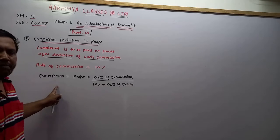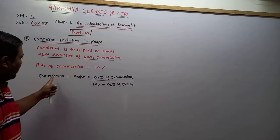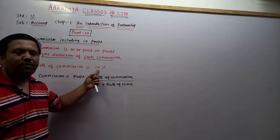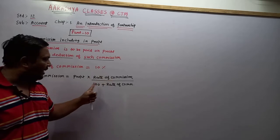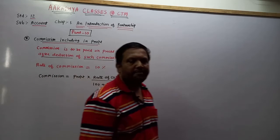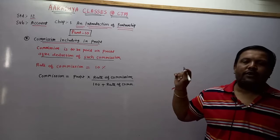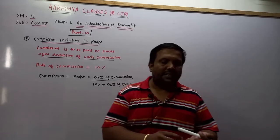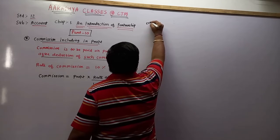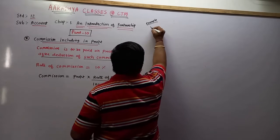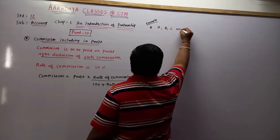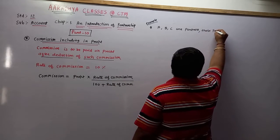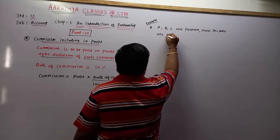यह formula याद रखना। यह chapter के अंदर fourth method बता रहा हूँ। Commission = Profit × Rate of Commission / (100 + Rate of Commission). Rate of commission question के अंदर दिया ही होगा — five percent, six percent, कोई भी हो — वो percentage लिखने का upon 100 plus जो भी rate of commission हो। यह formula खास ध्यान रख लेना। जैसे A, B, C are partners, their profit and loss ratio is 2:2:1.